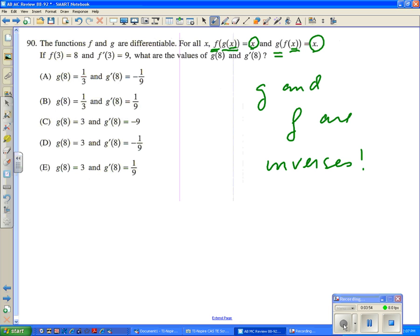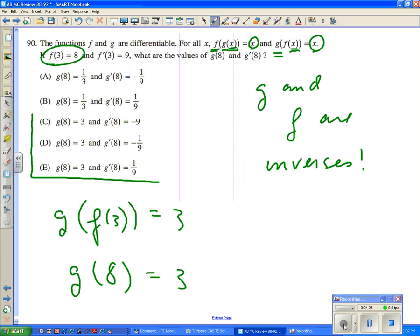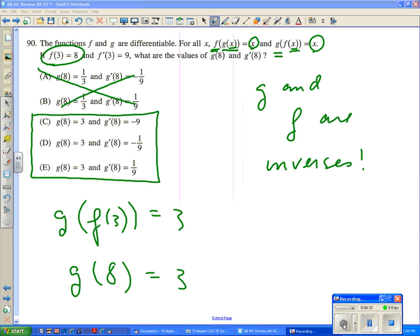So when we learn, for instance, that f of 3 gives us 8, if f of 3 gives us 8, if this is 8, and we apply the g rule to that, we know that this will take us back to 3. We know that that's the relationship, that g of 8 is 3. So we know that one of these three must be correct, that it can't be these first two.